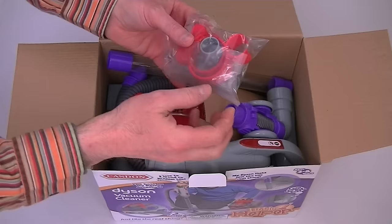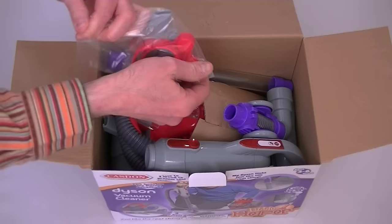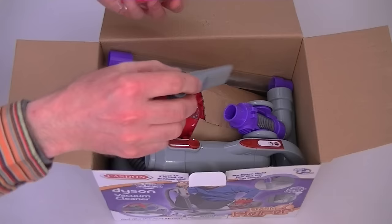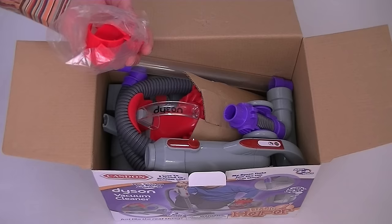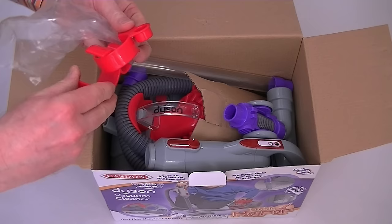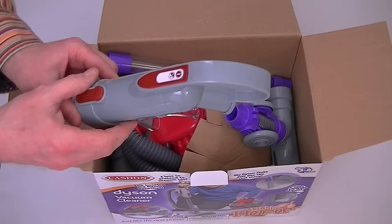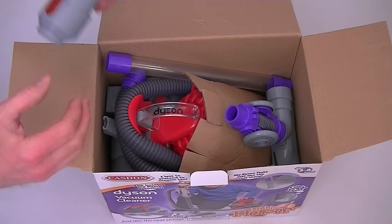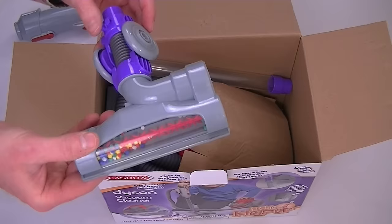And have a look at all the parts we get inside. Well, in this little bag we've got a crevice tool, a little upholstery nozzle. Not sure what these parts are, but I'm sure we'll find out soon. This looks like it's the hose handle. And this is our main carpet and floor nozzle.